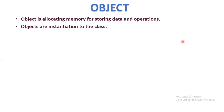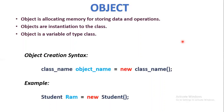We create objects from classes. An object is a variable of type class. Variables in programming are used to allocate memory — a variable is a name given to a memory location. Here, since an object is a variable, the data type is the class type. The syntax for creating an object is: ClassName objectName = new ClassName(). For example, for a Student class, we create 'ram' as an object, and memory is allocated to store the variables and methods declared inside the class.